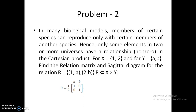Now let us draw the sagittal diagram. For set X, two dots are taken: the first dot is named 1 and the second is named 2. For set Y, the first dot is named a and the second is named b. We then correlate them: there is a relationship between 1 and a so we draw a line, and there is a relationship between 2 and b so we draw another line. That's all — very simple.